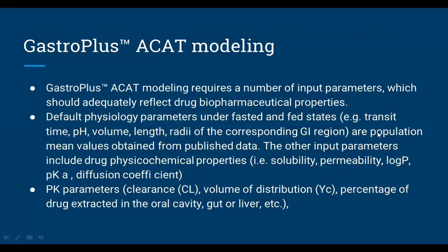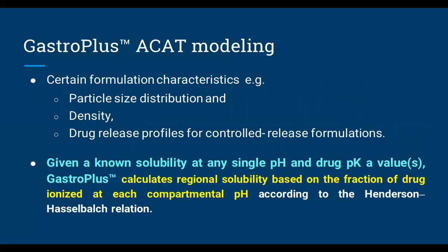It is a mathematical tool — by using software, we can do it like DOE: there is an input parameter and a response parameter. Input parameters such as transit time, pH, volume, and length corresponding to the GI segment are population means obtained from literature. This data can be used for different populations — healthy volunteers, pediatric, or pregnant women. The same study data for different populations gives very nice predictions. Drug solubility, log P, permeability, diffusion coefficient are key parameters.